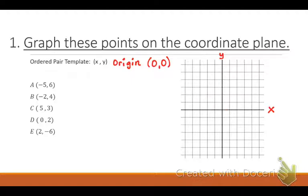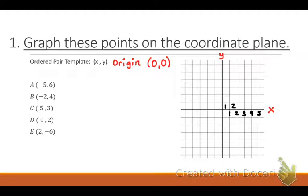Whenever you are plotting points, you have to understand what the lines mean. If this right here is the origin at zero, zero, think of it like a number line. One is bigger than zero, so this is number one, this is two, three, four, and five. Notice I am labeling the line — I am not labeling the box. Go ahead and label the lines, not the boxes.